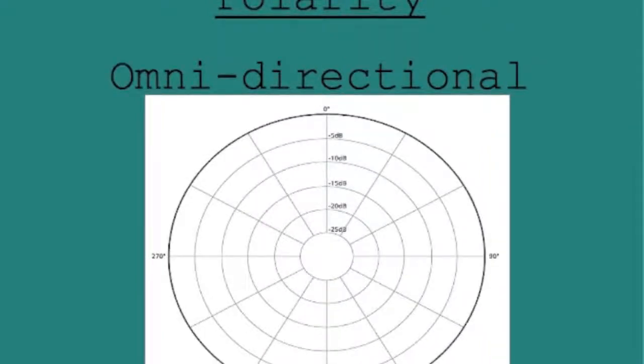This last polarity pattern is the omnidirectional, and it takes in sound equally from all sides in 360 degrees. And all the higher end condenser mics have an option on them to use omnidirectional, or figure eight, or cardioid. So you can kind of get a different range of sounds from the same microphone.